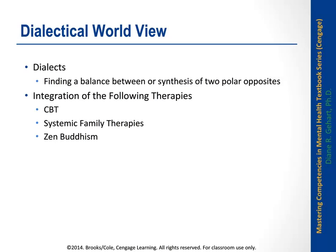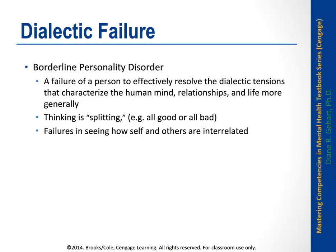For example: I love you, I can't stand what you're doing right now — and how do I integrate that into a coherent version of who you are and how I'm going to respond to you. We're constantly doing this, and it's an ongoing evolving process. This is what was unique about what she added to make CBT relevant to those diagnosed with borderline. Linehan noticed that those diagnosed with borderline personality disorder had this failure to effectively resolve many of the basic dialectic tensions that characterize the human mind and relationships. They would get into black-and-white thinking — the splitting — everything's all good, they're all bad, I love you, you're perfect, then I hate you, you're a demon. They just could not reconcile these polarities that characterize life.